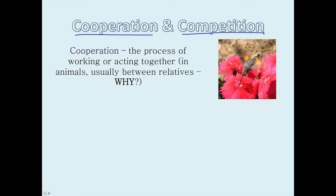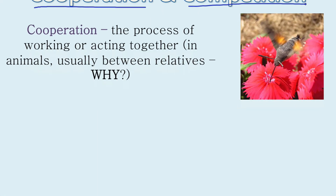Two big concepts happening in the community are cooperation and competition. We're going to specifically apply them to ecology. Cooperation is the process of working or acting together, and in animals it's usually between relatives. I want you to think about why this is and jot down a reason in your notes. We've studied evolution this year — I think you'd be able to answer: why do relatives want to cooperate with each other?